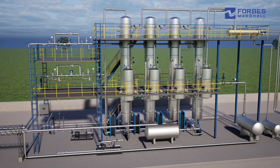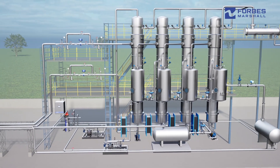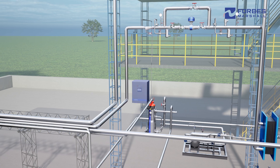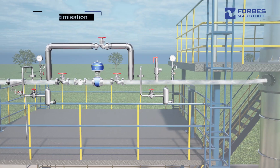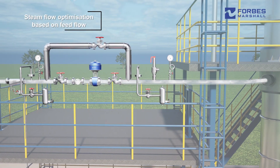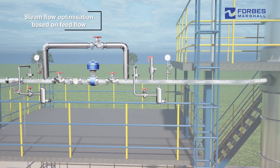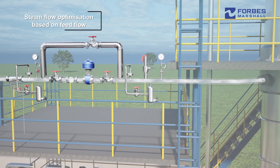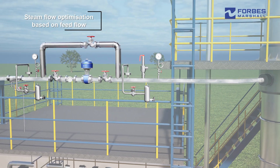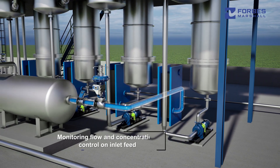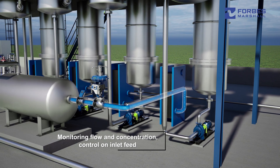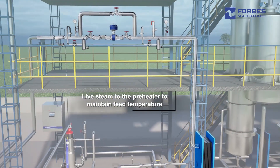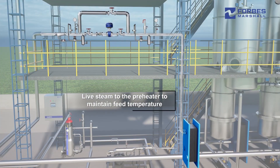Forbes Marshall provides a holistic solution designed to enhance and manage evaporator performance. The control philosophy focuses on proactive modulation of key parameters in response to dynamic variations. Steam flow is optimized for each feed flow range to achieve optimal steam economy while ensuring desired evaporation, product specific gravity, and consistent calendria levels. Inlet feed is monitored for flow and concentration, and a steady feed flow is maintained.